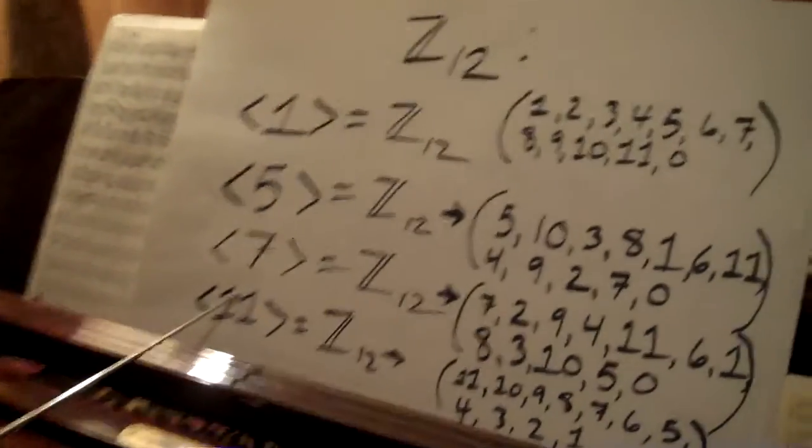If we examine the intervals, the 12 intervals within an octave that we've been looking at, as a group it also is cyclic because it has actually four generator elements: 1, 5, 7, and 11.